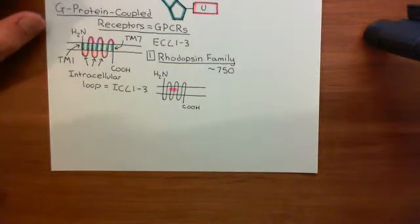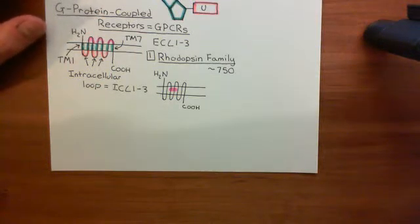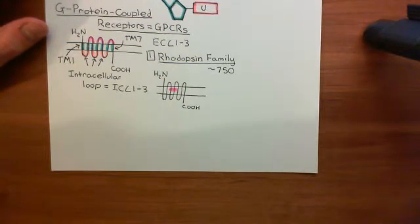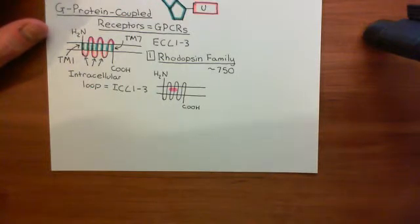Welcome back to this next video in which we are discussing the P2Y receptors. We've discussed that there are 8 different types of P2Y receptor, and that they are all G-protein coupled receptors. We're now in the process of discussing the different families of G-protein coupled receptors.